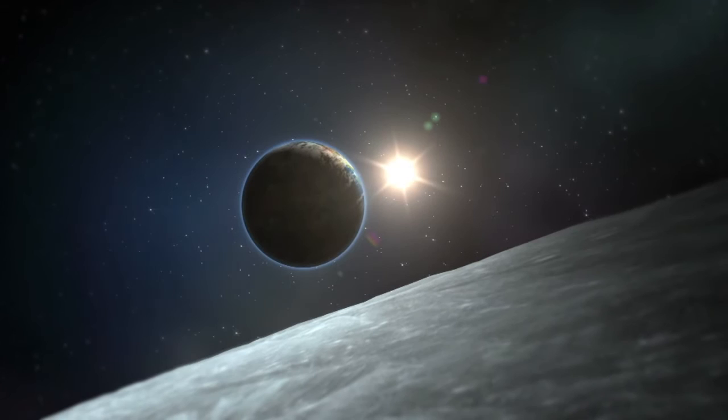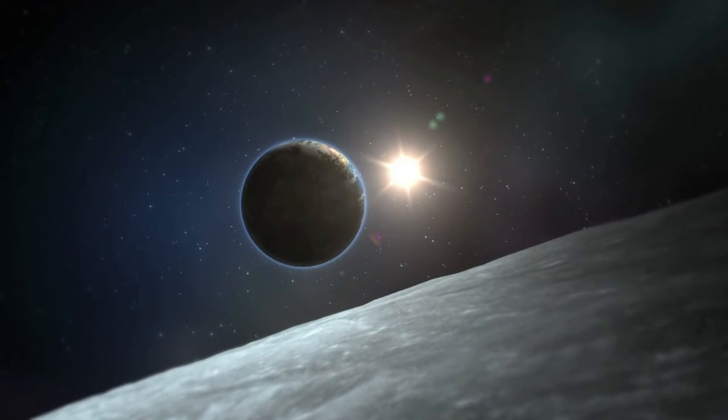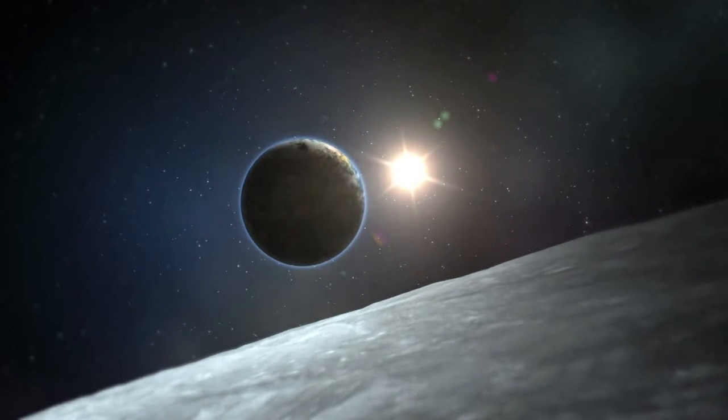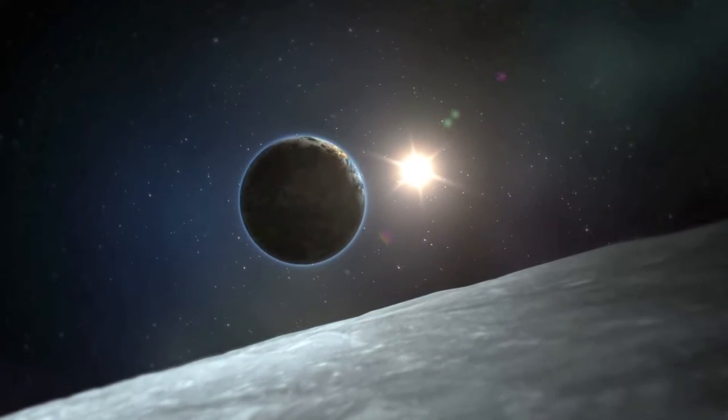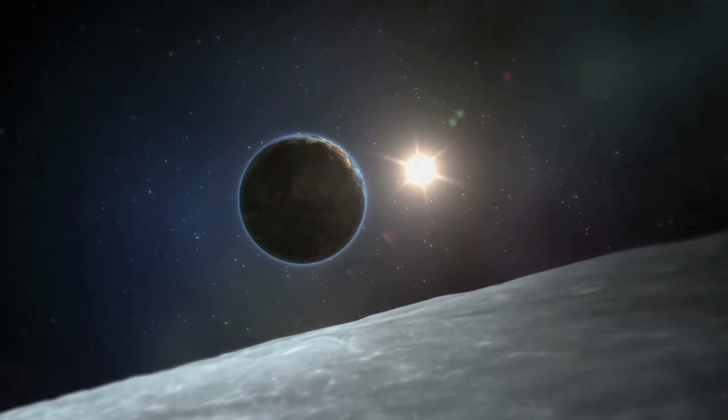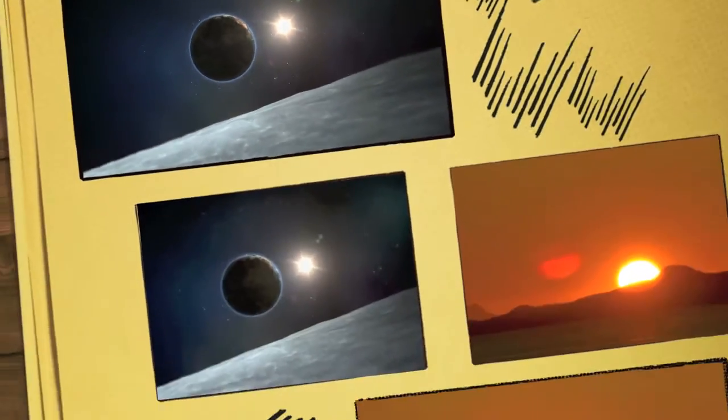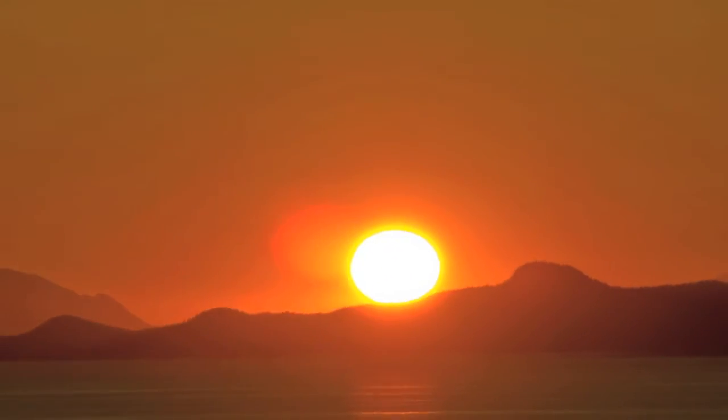This means that 3.5 billion years ago, the Sun was bathing the Earth in considerably less energy than we receive today. Under those conditions, life as we know it today could not have existed. Yet we are told that it was under these very conditions that life supposedly evolved.